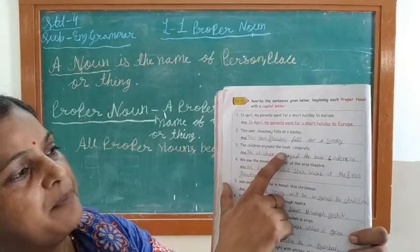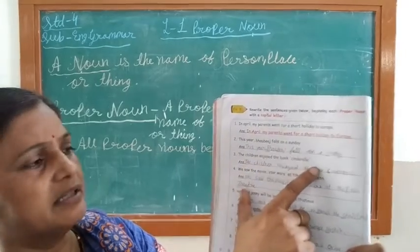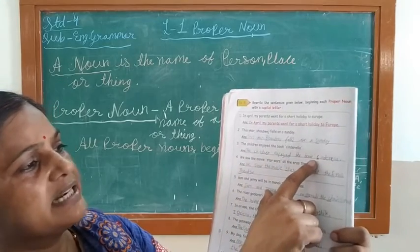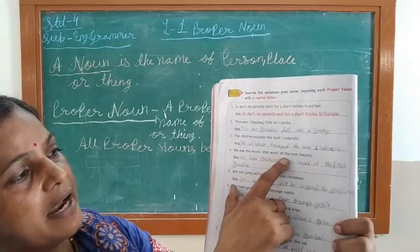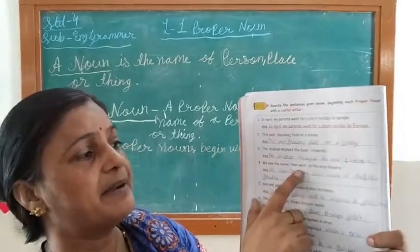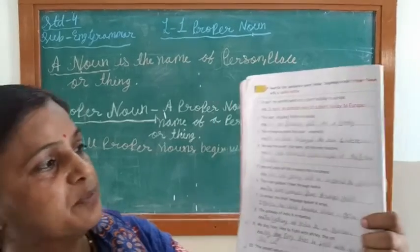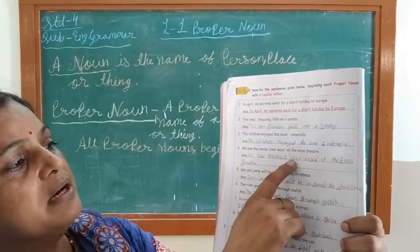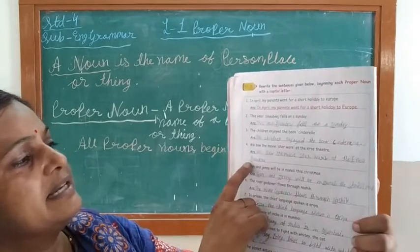The children enjoyed the book Cinderella — T capital, and Cinderella's C is capital. We saw the movie Star Wars at the Eros Theater — Star Wars: S capital; Eros: E capital; Theater: T capital.